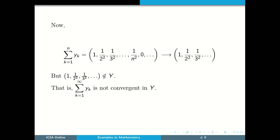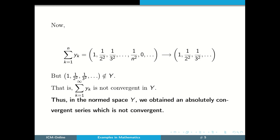That is, summation k equals 1 to infinity yk is not convergent in the subspace y. Thus, in the normed space y, we obtained an absolutely convergent series which is not convergent.